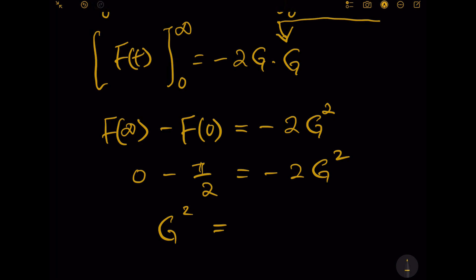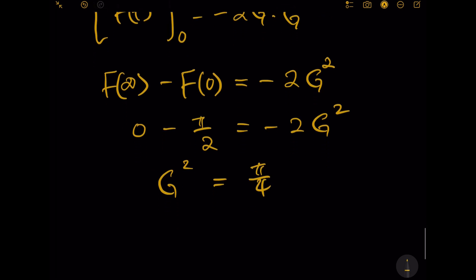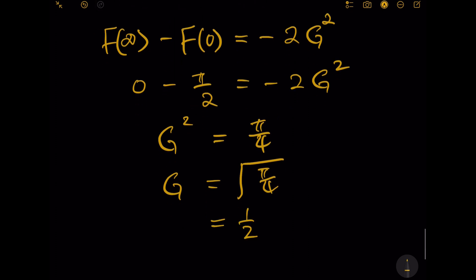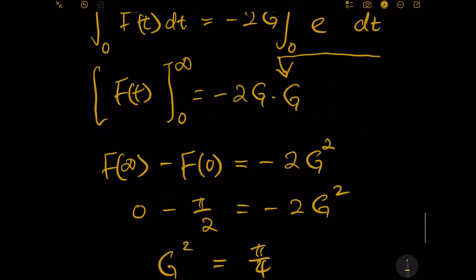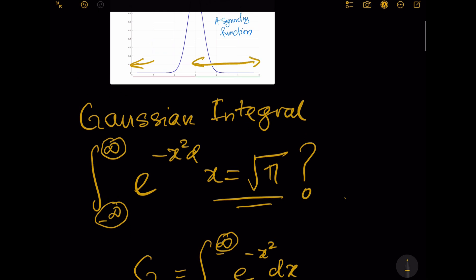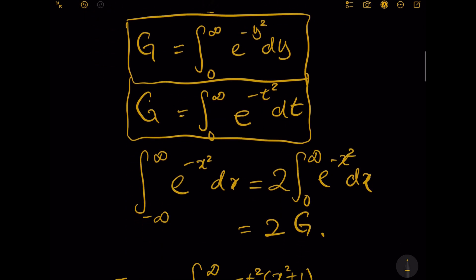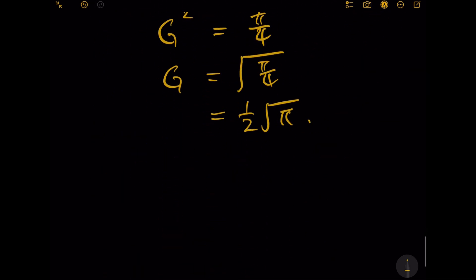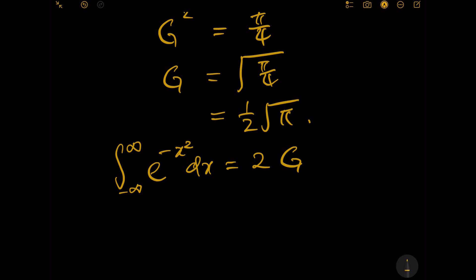Solving for G: G squared equals π/4, so G equals the square root of π/4, which is (1/2) times the square root of π. But remember, G was defined as the integral from zero to infinity, and we want the full integral from negative infinity to positive infinity, which equals 2G. Since G equals (1/2)√π, we get 2G equals √π. That is our final answer.